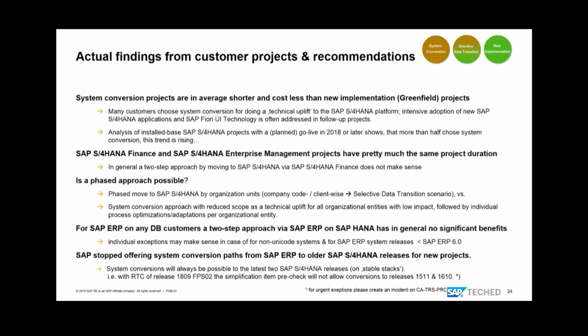Exceptional or phased approaches are possible. You can do a system conversion with pure focus on the technical implementation, then let different business units innovate independently. Or you can do a new implementation with phased data migration company code by company code. However, be aware that a phased approach means a coexistence of two system landscapes with interfaces between them, since you rarely get a clean cut between org units — this requires significant effort and isn't necessarily supported by SAP standard interfaces.